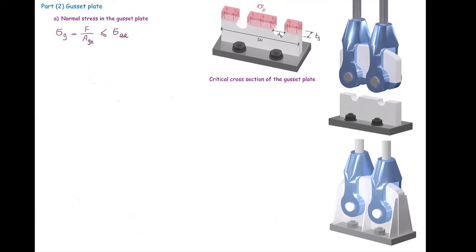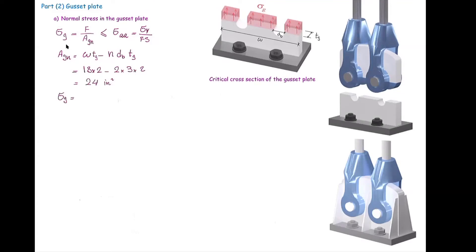To distinguish between stresses I use σ_g for the gusset plate. The net area is the total cross-section area minus n × d × t_g. Plugging in the values gives the net area, and substituting into the design equation allows us to solve for F — the force causing failure on the net cross-section area of the gusset plate.